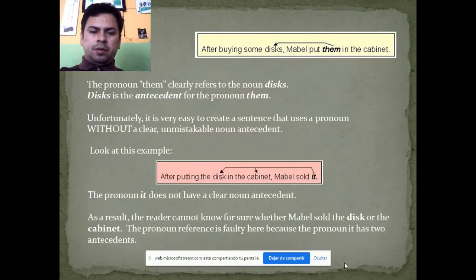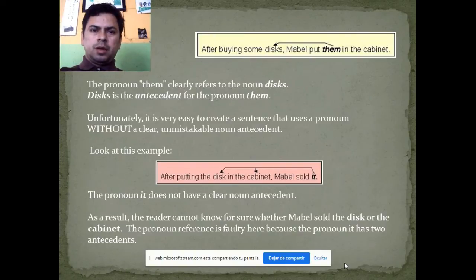Look at this example: After putting the disc in the cabinet, Mabel saw it. The pronoun 'it' does not have a clear noun antecedent. As a result, the reader cannot know for sure whether Mabel saw the disc or the cabinet. The pronoun reference is faulty here because the pronoun 'it' has two possible antecedents.